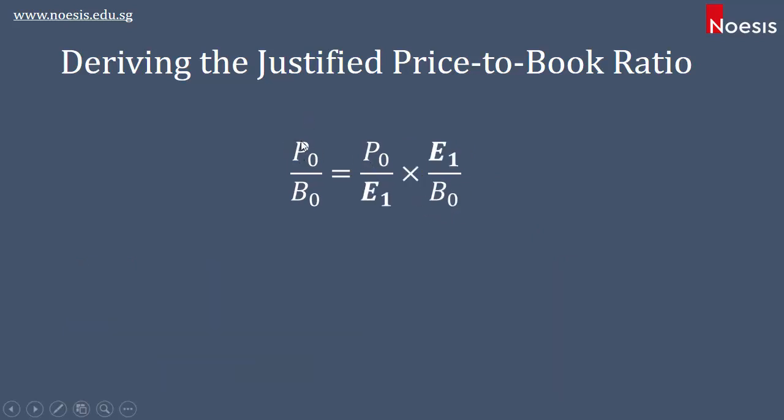First off, let's decompose the price-to-book ratio, which is equal to the leading PE ratio multiplied by the forecast earnings for the next one year over the current book value per share.